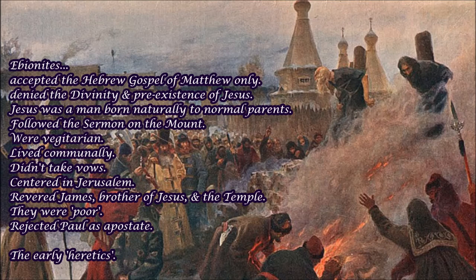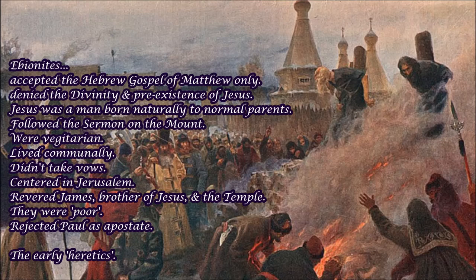The Ebionites were centered in Jerusalem. They revered James, the brother of Jesus, and they were frequently at the temple. And they didn't take vows — which, if you look at the life of Saint Anthony, one of his big problems was that he was bound by vows: a vow of poverty and a vow of obedience to the church, both of which pretty much got him into trouble. And they were poor. Saint Anthony considered poverty to be a great virtue, as did Saint Anthony the Great, who he was named after, as did Francis of Assisi. So the Ebionites were in perfect harmony with the philosophy of Saint Anthony.